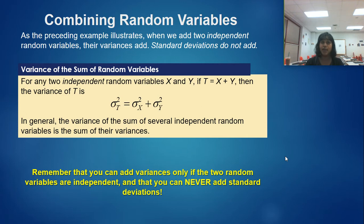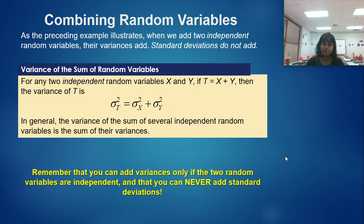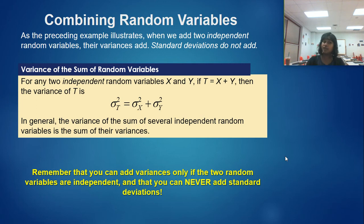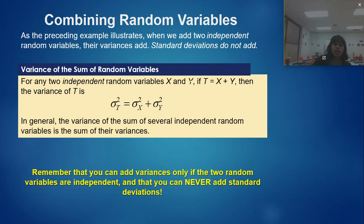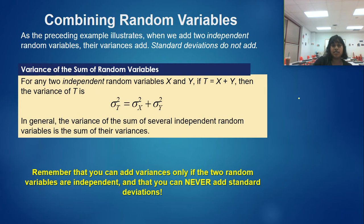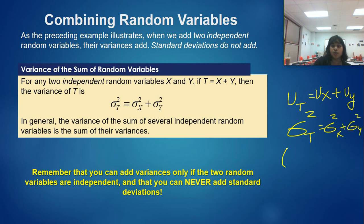Either in this slide or previously, I showed that we weren't actually adding standard deviations — we squared standard deviation to get variance, because the square root of variance is standard deviation, and standard deviation squared is variance. Here is the formula for the variance of the sum of two independent random variables: the mean of T is the mean of X plus the mean of Y; the variance of T is the variance of X plus the variance of Y.